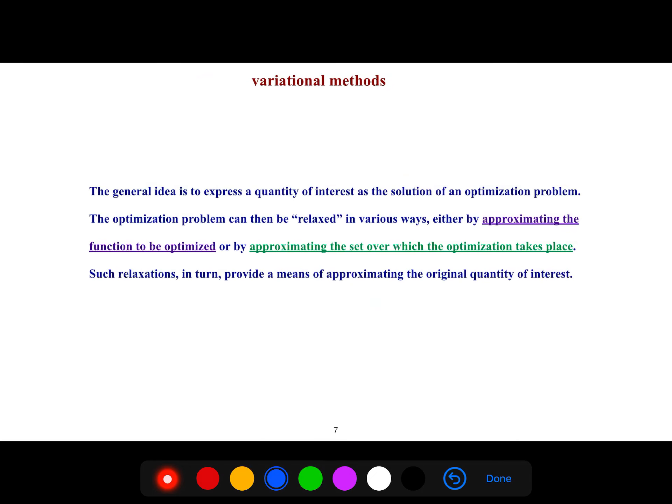So the general idea is to express a quantity of interest as the solution of an optimization problem. The optimization problem can then be relaxed in various ways approximating the function to be optimized, or by approximating the set over which the optimization takes place.